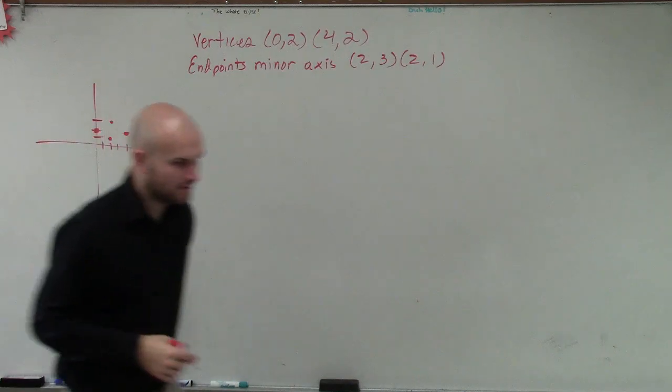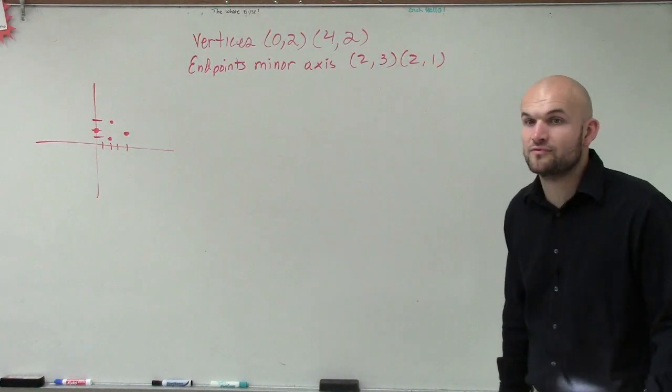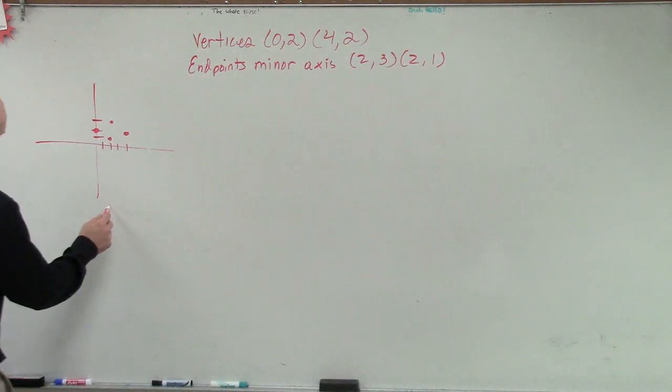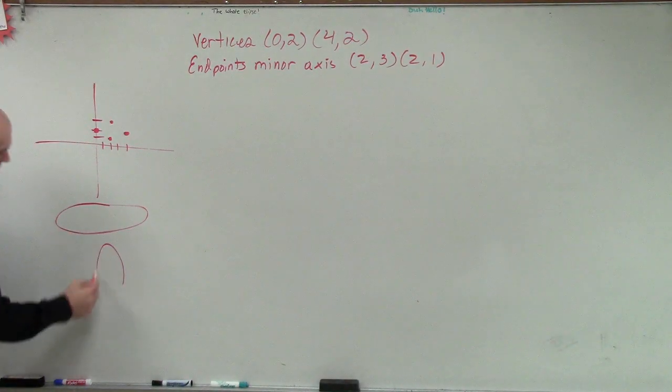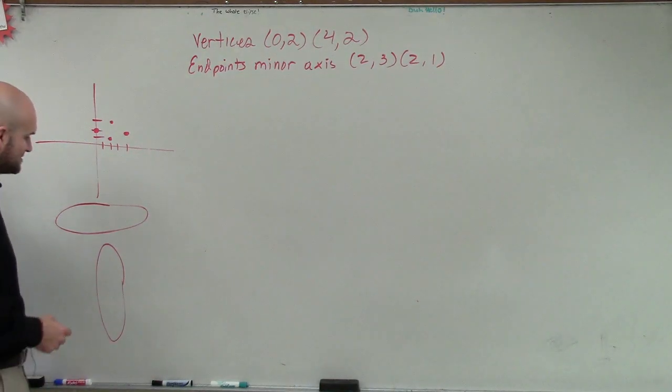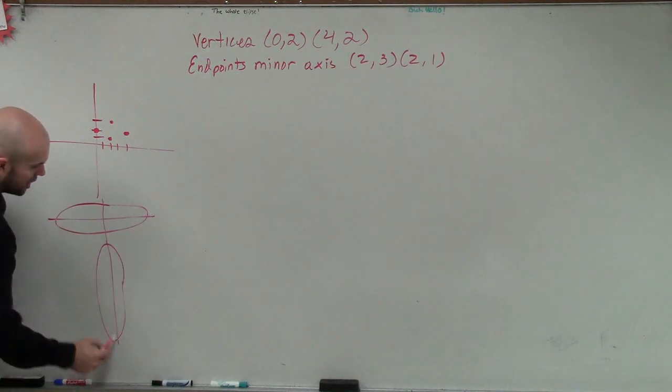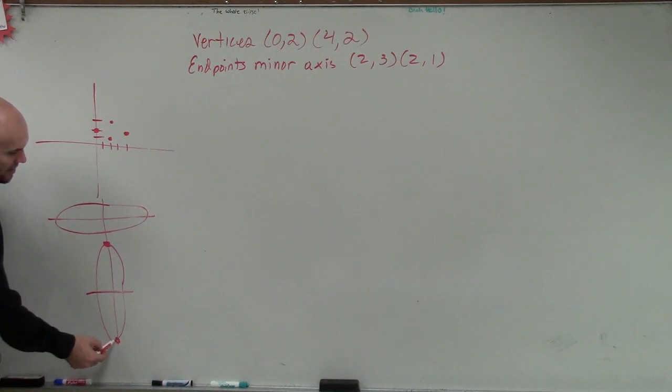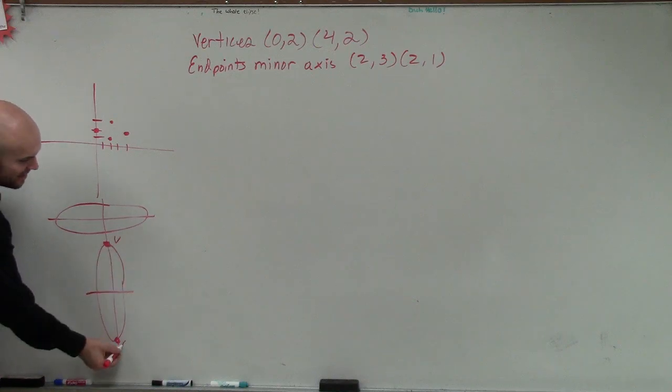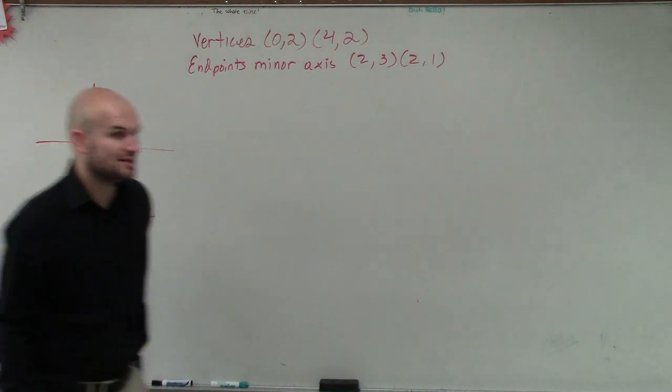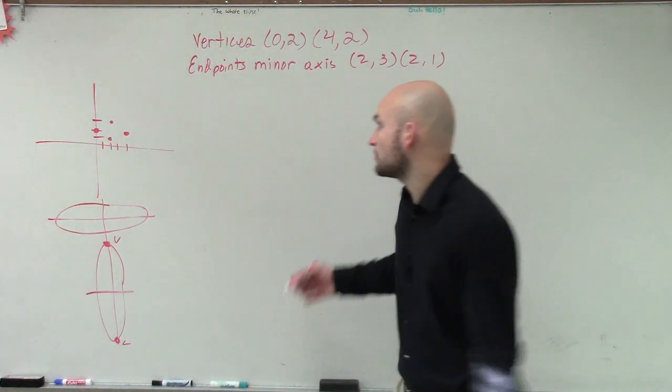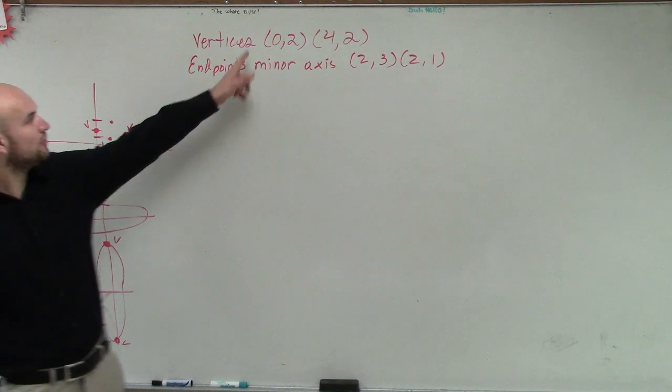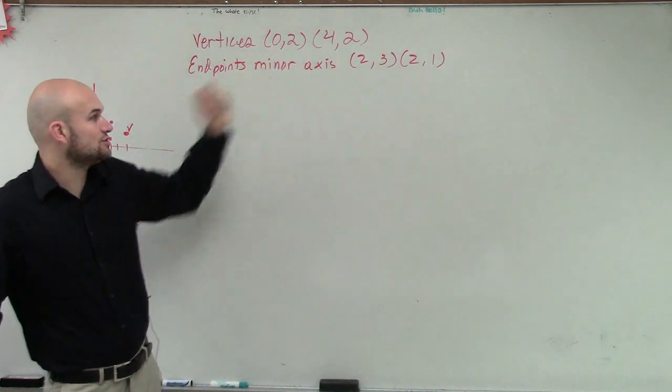Okay, so remember, ladies and gentlemen, there's two types of ellipses we have. We have the horizontal ellipse and our vertical ellipse. Remember that the larger length is what we call our major axis. So we're given what's at the end of our major axis is what we call our vertices. So here are our two vertices, right? That's our endpoint. The vertices are at 0, 2, and 4, 2.